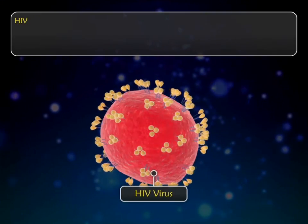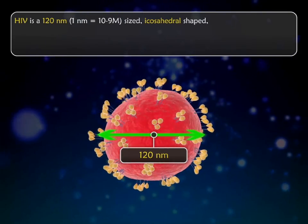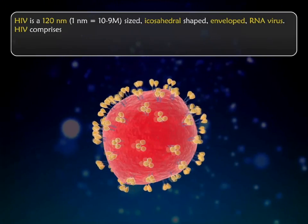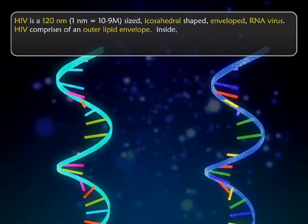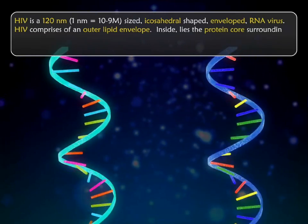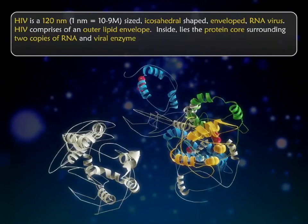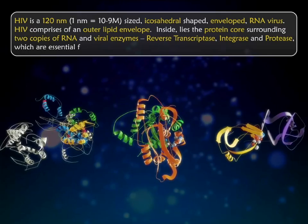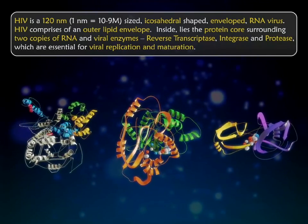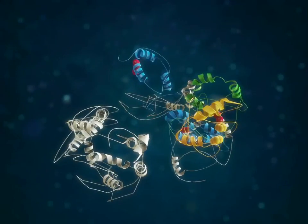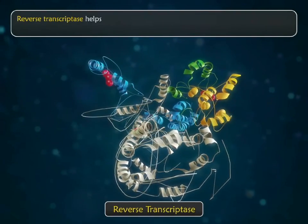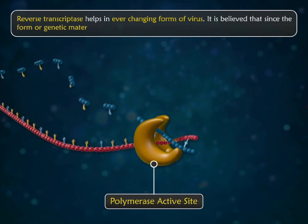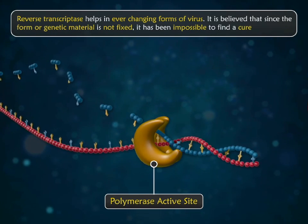HIV is a 120 nanometre sized, icosahedral shaped, enveloped RNA virus. HIV comprises of an outer lipid envelope. HIV helps in ever-changing forms of the virus. It is believed that since the form of genetic material is not fixed, it has been impossible to find a cure for it.